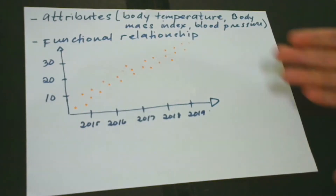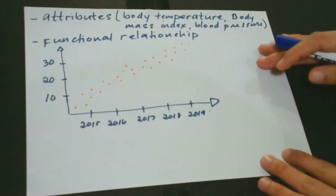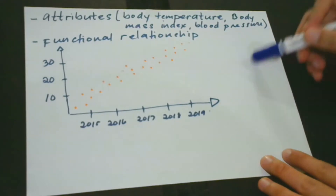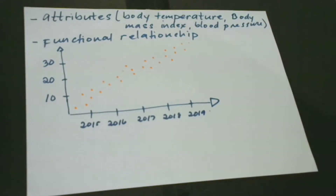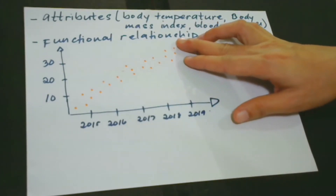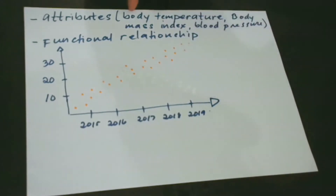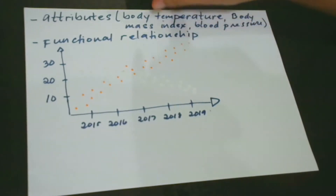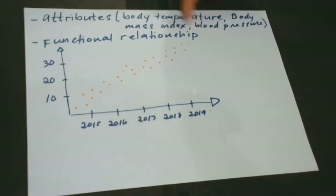For better results, you should get these measurements from patients who have a known disease state. After taking the measures, you may want to identify who among them are healthy or deceased. This kind of situation describes a significant and general technique in machine learning: inferring a functional relationship between a set of attribute variables so we can understand the interaction among them.